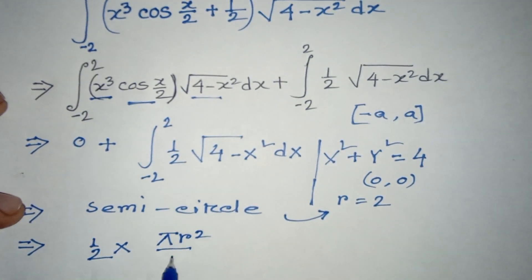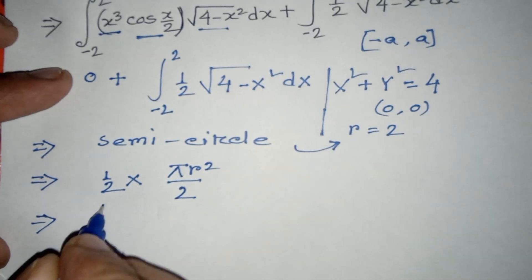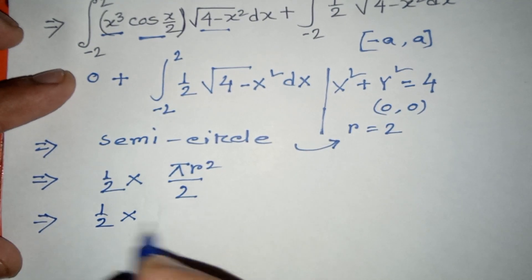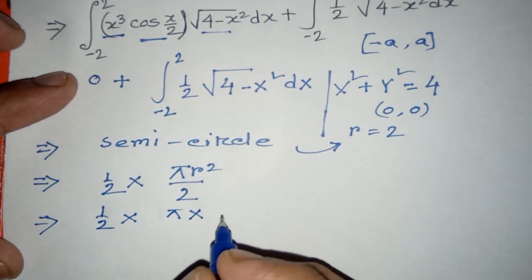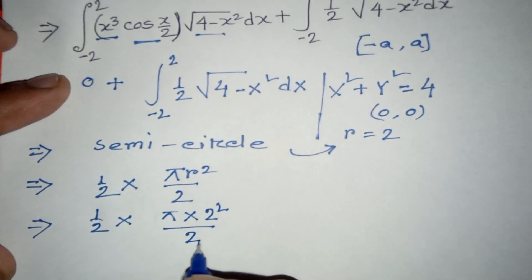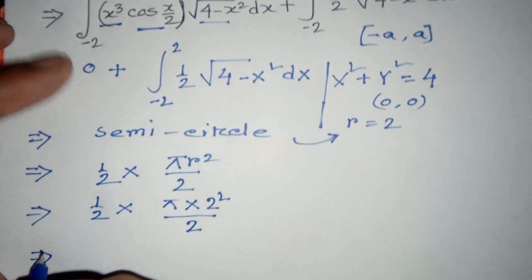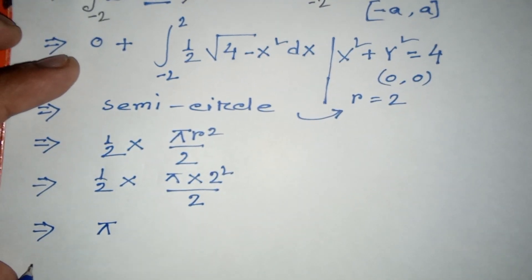1/2 into πr²/2, which is 1/2 × π × 2²/2 equals π. The value of π is 3.14159265...